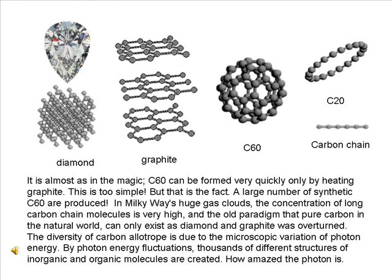Synthetic C60 can be formed very quickly simply by heating graphite. This is remarkably simple, but it is a fact — a large number of C60 molecules are produced. In the Milky Way's huge gas clouds, the concentration of long carbon chain molecules is very high, and the old paradigm that pure carbon in the natural world can only exist as diamond and graphite was overturned. The diversity of carbon allotropes is due to the microscopic variation of photon energy. By photon energy fluctuations, thousands of different structures of inorganic and organic molecules are created.